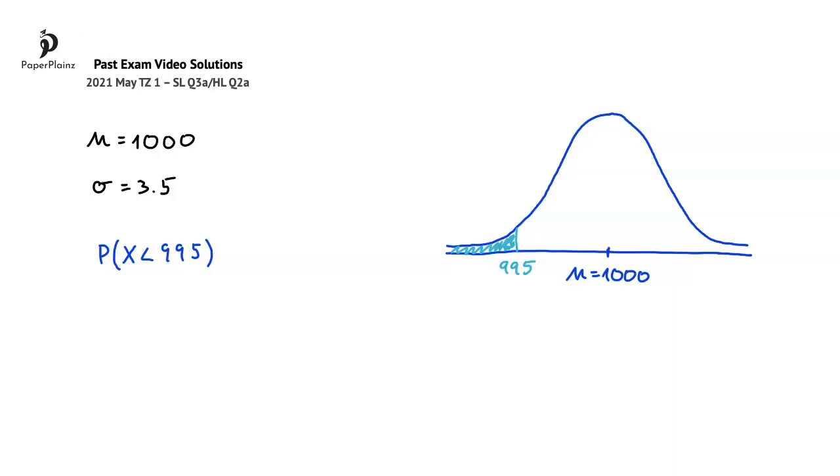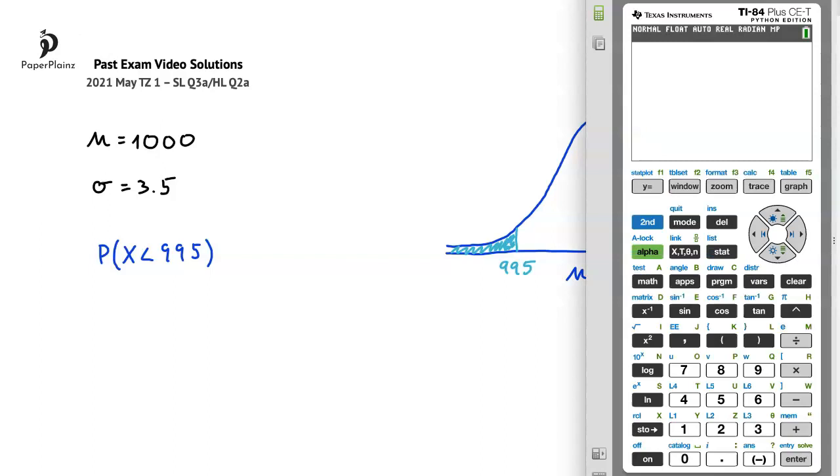From here we'll use our calculator to find the answer. Since this is a normal distribution question, we have to choose distributions, which we can do by pressing 2nd and then vars. We are looking for a probability on this normal distribution, therefore we'll choose normalcdf, so option 2.